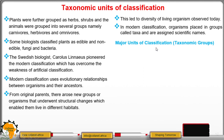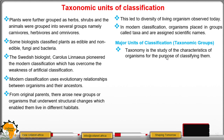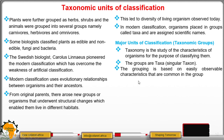What are the major units of classification, or the taxonomic groups? Taxonomy is the study of the characteristics of organisms for the purpose of grouping them. The groups are called taxa, and if they are singular, we call it a taxon. The grouping is based on easily observable characteristics that are common within the group.